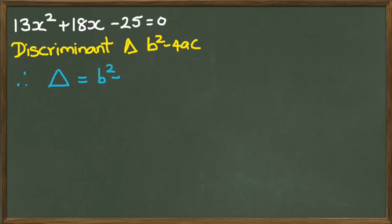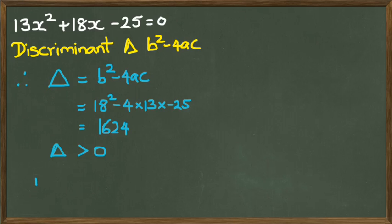So we substitute b squared, which is 18 squared minus 4 times 13 times negative 25. Those are our values for b, a, and c. And we get a value of 1624. Now, the discriminant is greater than 0, which means we are going to have intersection at two points.